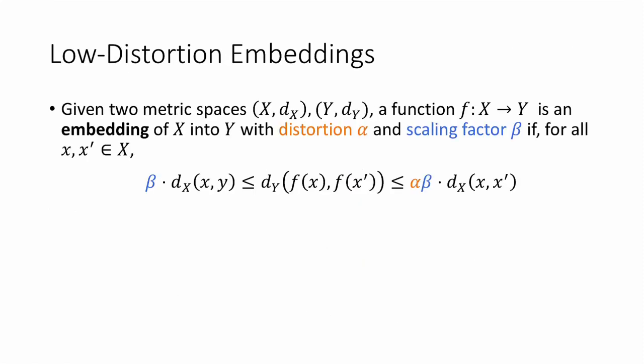The fact that we don't always have isometric embeddings leads us to the notion of low distortion embeddings. So that is, if we can't get an exact isometry, we might hope for an approximate one. More precisely, given two metric spaces, (X, d_X) and (Y, d_Y), we say that a function f that maps X to Y is an embedding of X into Y with distortion α and scaling factor β, if for all x and x' in X,